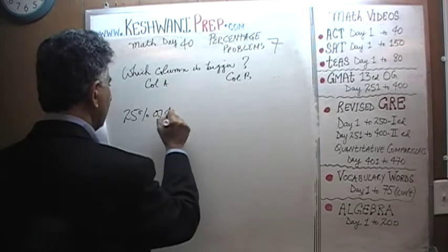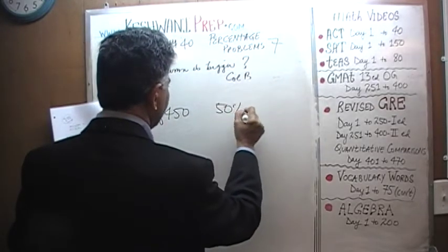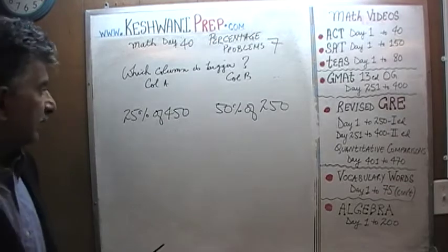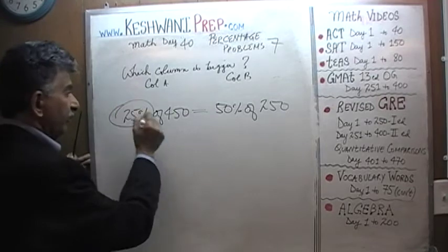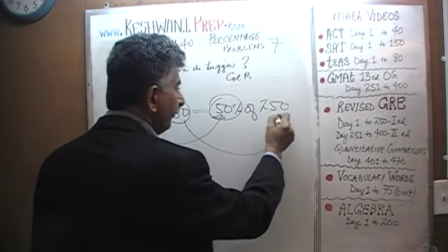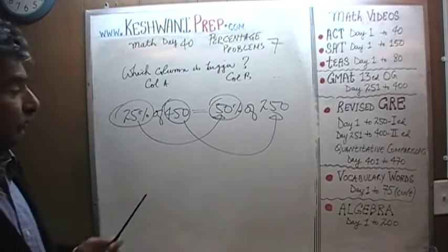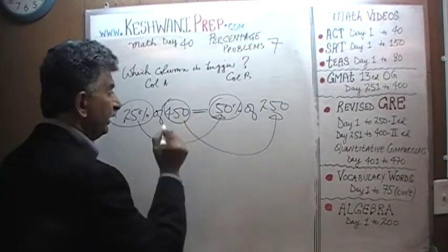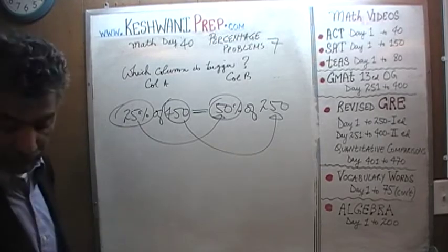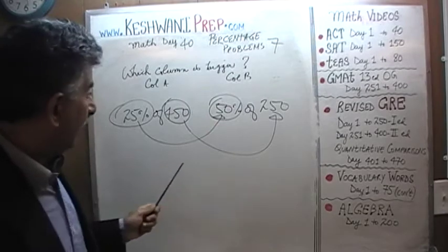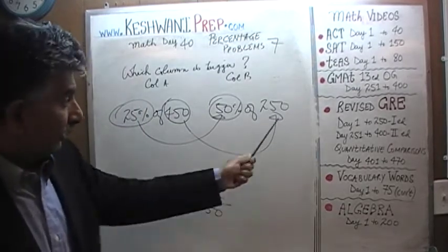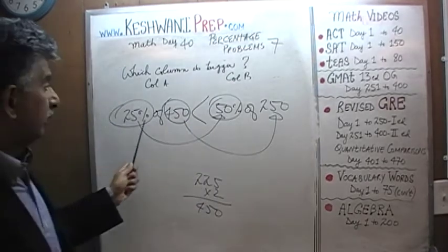25% of 450 versus 50% of 250. What do you conclude? Are these two quantities equal? We have 25% here and 50% there — that's twice the percentage. Here we have 450 and here we have 250. In order for these two quantities to be equal, this amount has to be half of 450, which is 225. But 250 is not half of 450 — therefore 50% of 250 is going to be more than 25% of 450. They are not equal.